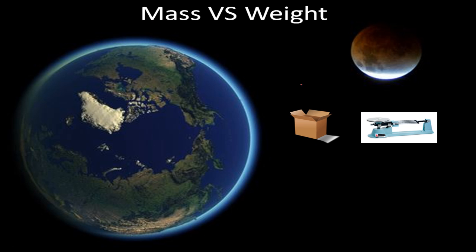So let's say that I have this box here, and I fill this box up with some sand. Then I take the box and I measure it on a triple beam balance, which is the tool that we use to measure mass, and I get a mass of 10 kilograms. Now, that would be the mass of the sand and the box. If I was to go anywhere on Earth and do the same measurement using a triple beam balance, I would get 10 kilograms.